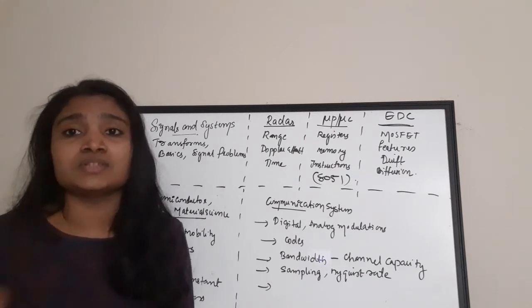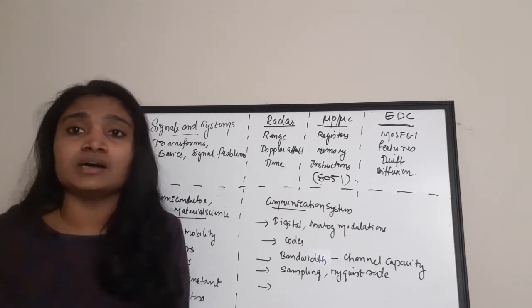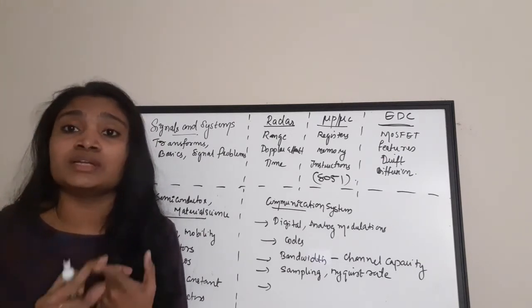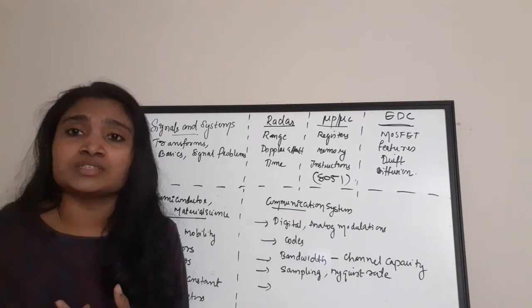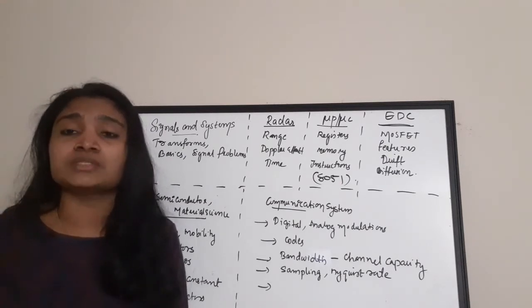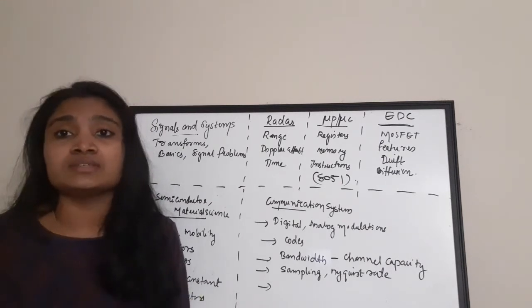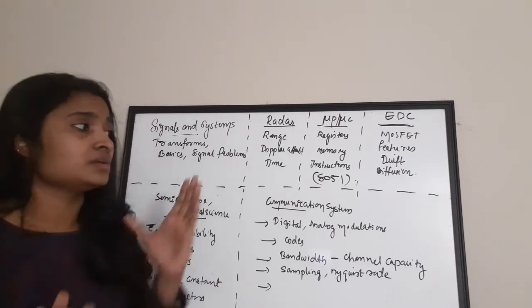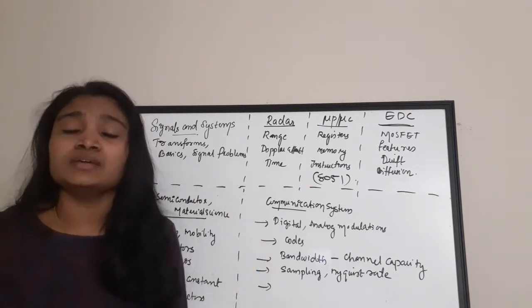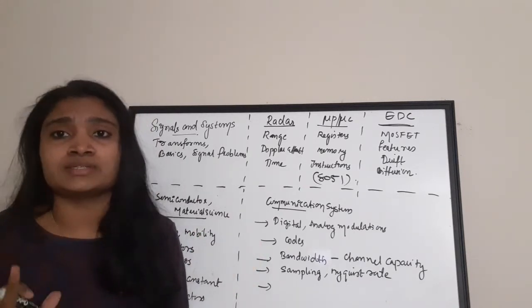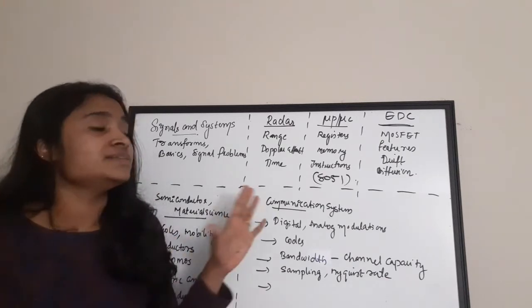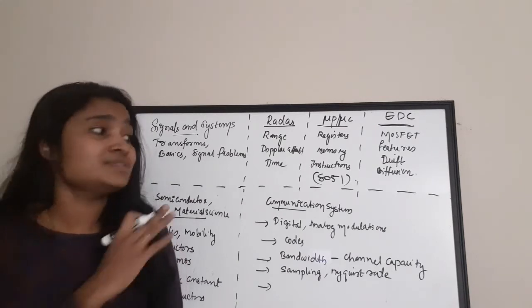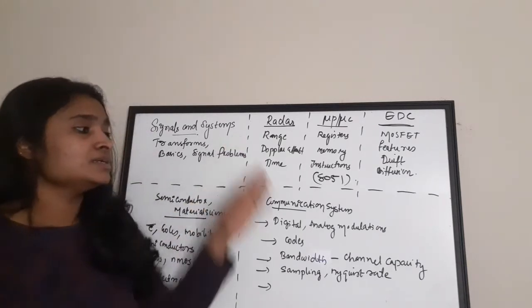You also have to concentrate on General Aptitude — mainly ladder problems, train problems, and age problems. However, focus primarily on your technical subjects since there will be only three to six questions from General Aptitude, and the rest will all be from your subject.